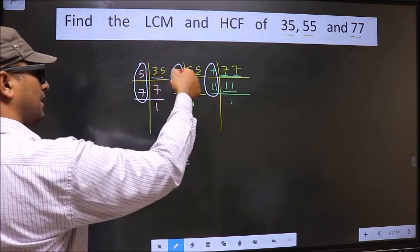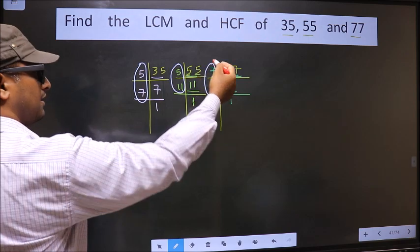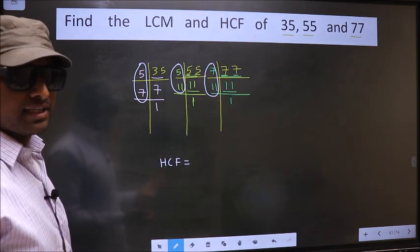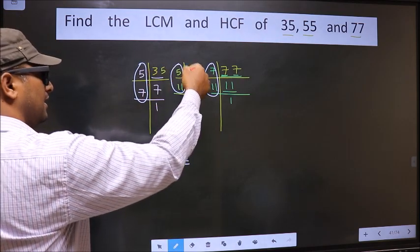Here, I repeat: HCF is the product of numbers which should be present in these 3 places. Here, and here, and also here. So now, let us find the numbers which are present here, and here, and also here.